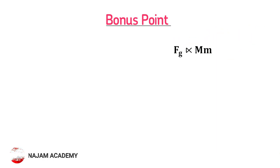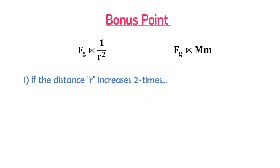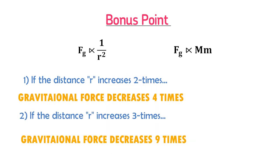As a bonus point: gravitational force is directly proportional to the product of masses, and inversely proportional to the square of the distance between the centers of two objects. If the distance increases two times, the gravitational force decreases four times. If the distance increases three times, the gravitational force decreases nine times. Therefore, we say that gravitational force follows the inverse square law — it is an inverse square force.